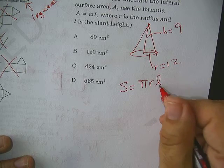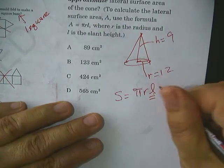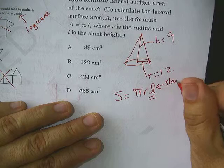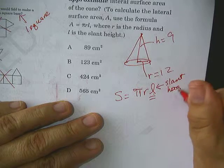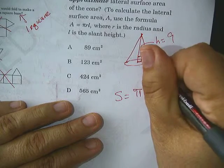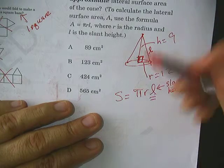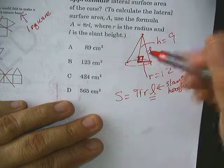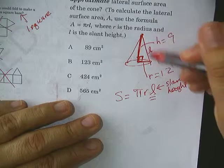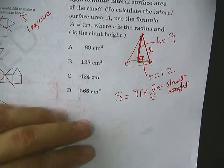So L is the slant height. That's important to know. Slant height. It's not the height. You might be tempted to just use the 9. So what we're going to do is we're going to use Pythagorean theorem and find this L right here. See how that's a right triangle between that radius and that height, and then this L all makes a beautiful right triangle.